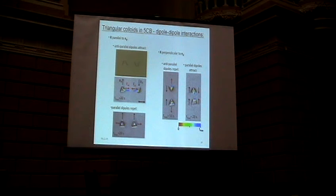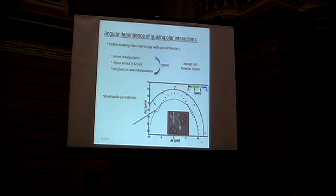And so triangles, they form these dipoles and they interact very much like dipoles. So if we have two triangles where their inter-particle separation vector is parallel to the far-field director, and their dipoles are oriented anti-parallel, they attract, just like dipoles would. If you flip one around, they repel. And then if you have them oriented such that they're perpendicular to the far-field director, they repel when they're anti-parallel and attract when they're parallel.